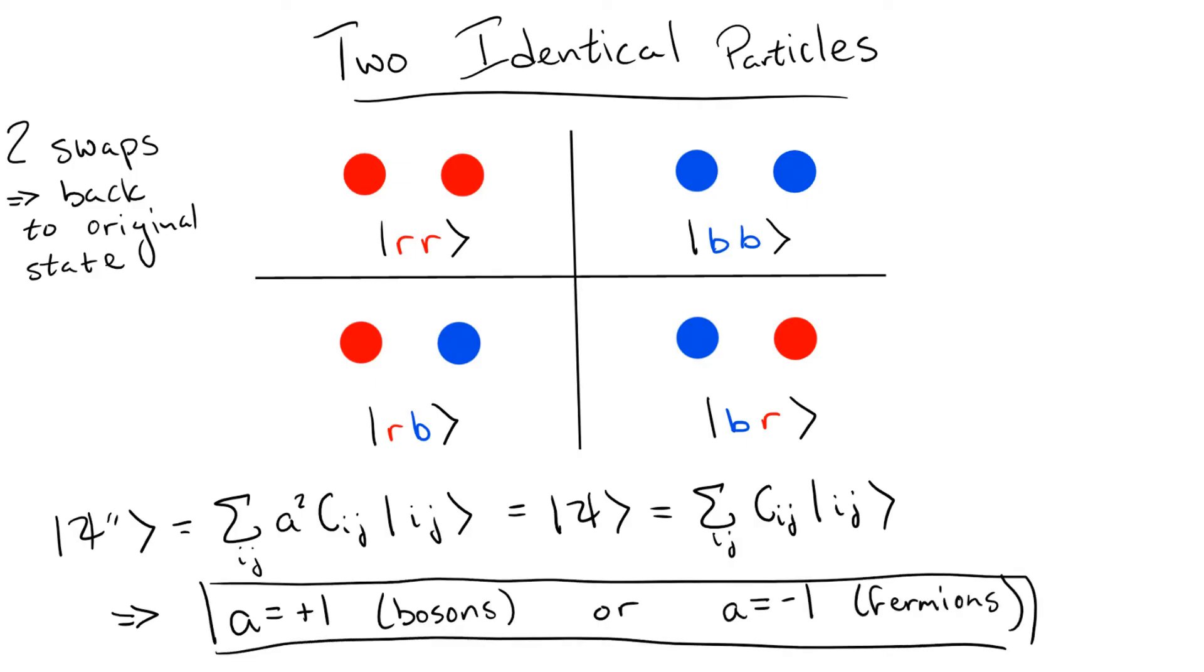This is exactly the difference between fermions and bosons. When two identical bosons are swapped, the wavefunction doesn't change. But when two identical fermions are swapped, the wavefunction picks up an overall minus sign.